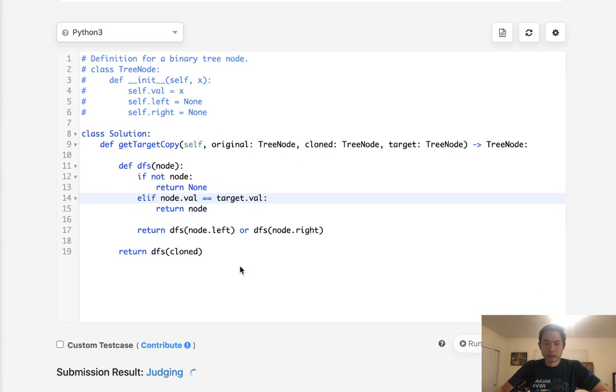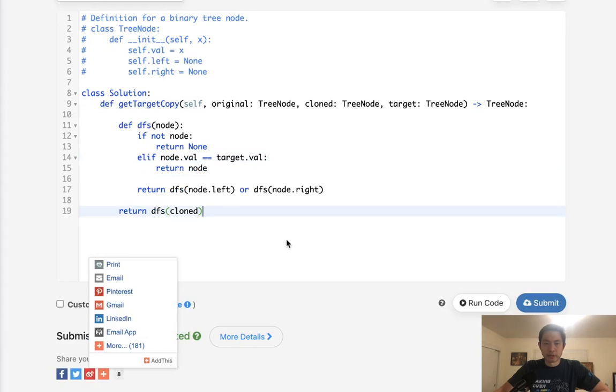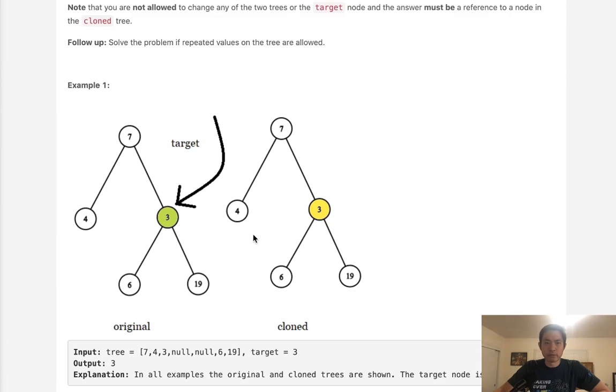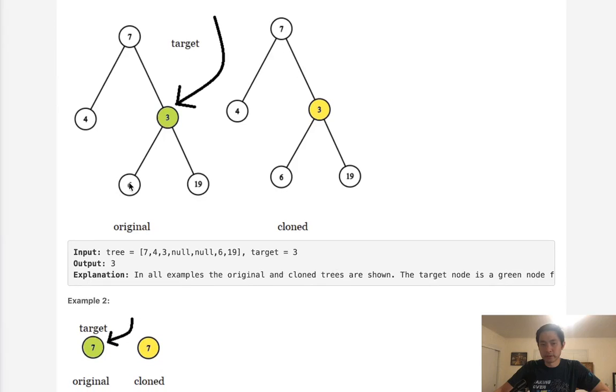Looks like that's working, so let's submit that. And there we go, accepted. This surprised me. I did not expect that to work so easily, but they do give you a follow-up: what if we could solve the problem if repeated values on the tree are allowed?